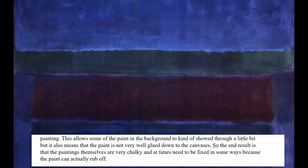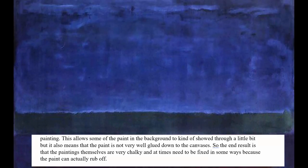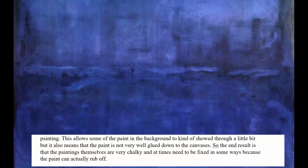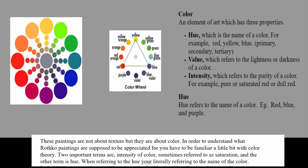The paint looks a little bit chalky, and conservators are having trouble with these paintings because sometimes they're a little chalky and they rub off, so they need to fix that. So the paintings aren't really about texture — they're more about color and form. In order to understand a Rothko painting and what you're supposed to appreciate about it, you have to know a little bit about color theory.